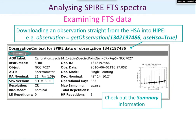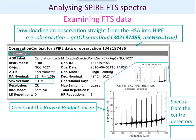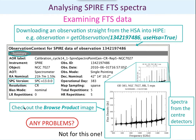Examining FTS data in HIPE: you can download it straight from the archive using useHsa equals true in the getObservation command. When you download it, you download the observation context — it doesn't download all the data immediately, so it won't take an age. When you click on a level, that's when it downloads. In the summary information, if you've been searching the archive and you've picked an observation, you can check that it's the sort of observation you're after, check that it's HIPE 13 reduced, the resolution, the map sampling, etc. There's also a useful browse product image — if you click on it, it will expand and you can have a look to see if there are any obvious problems with the spectrum. For this observation of NGC 707, it looks good.